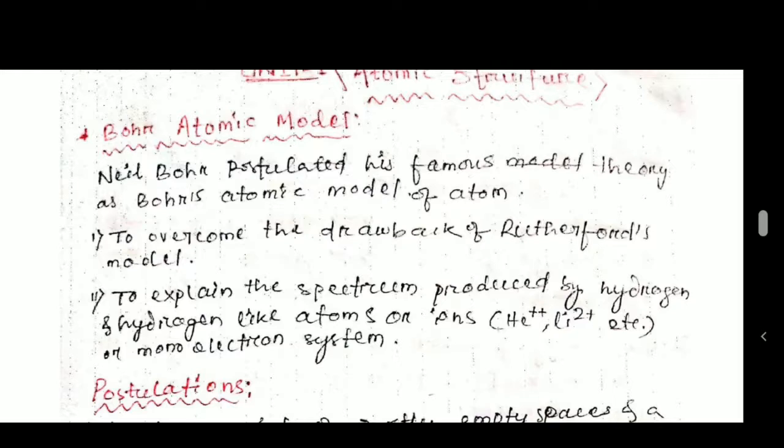In his atomic model, Bohr explained the spectrum produced by hydrogen and hydrogen-like atoms, ions, or mono-electron systems. Spectrum is the emission of light. When electric discharge is passed through the hydrogen atom, a bluish glow is obtained; when that glow passes through a prism, the spectrum is produced.